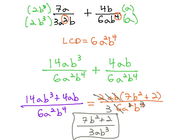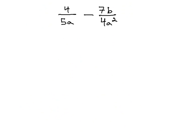Let's try a subtraction problem. This subtraction problem, 4 over 5a minus 7b over 4a squared, we need the least common denominator of 4 and 5 to be 20, and with an a squared, using the highest exponent.